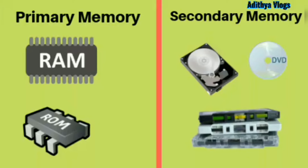Primary memory is also called the main memory of the computer. RAM stands for Random Access Memory and ROM stands for Read Only Memory, but both these memories differ from each other. RAM is a volatile memory — the memory gets lost once the power is turned off. Both read and write operations can be performed on information stored in RAM.